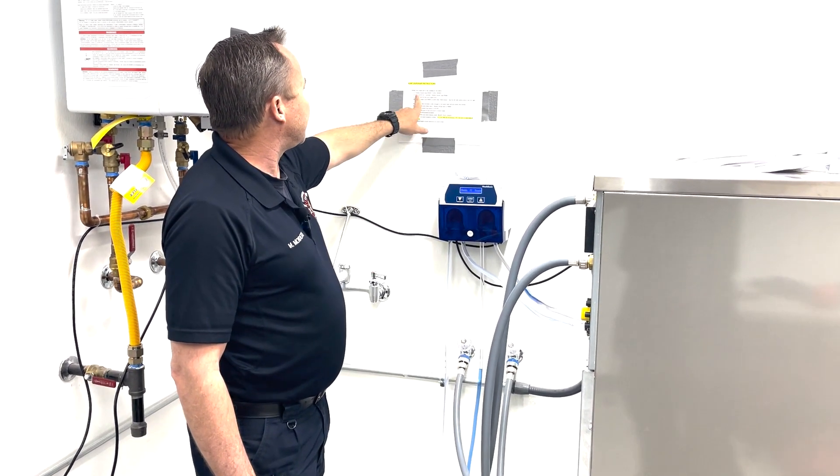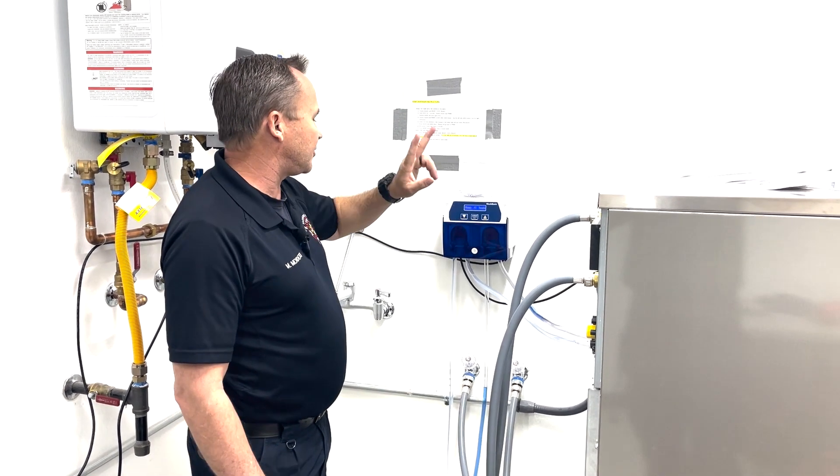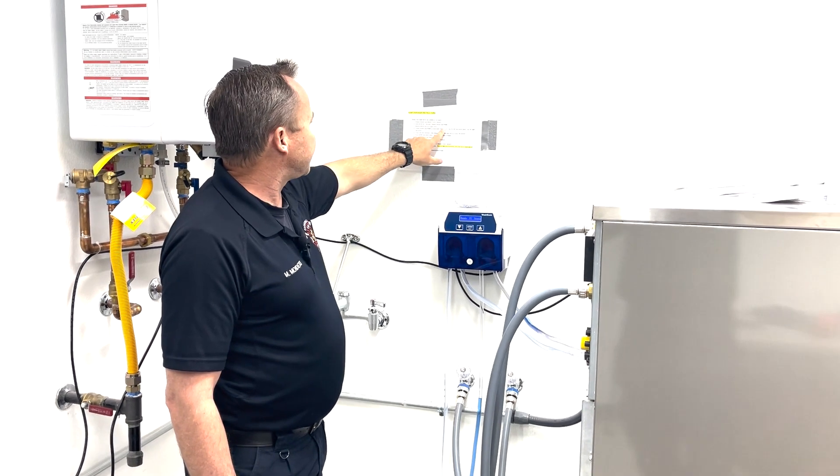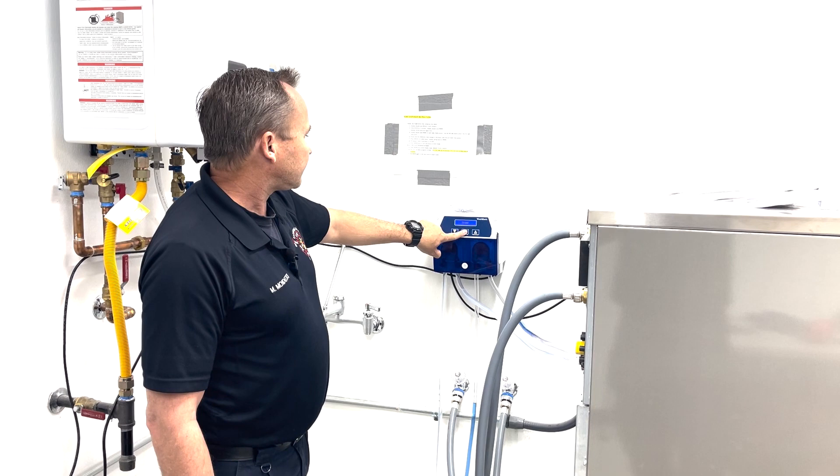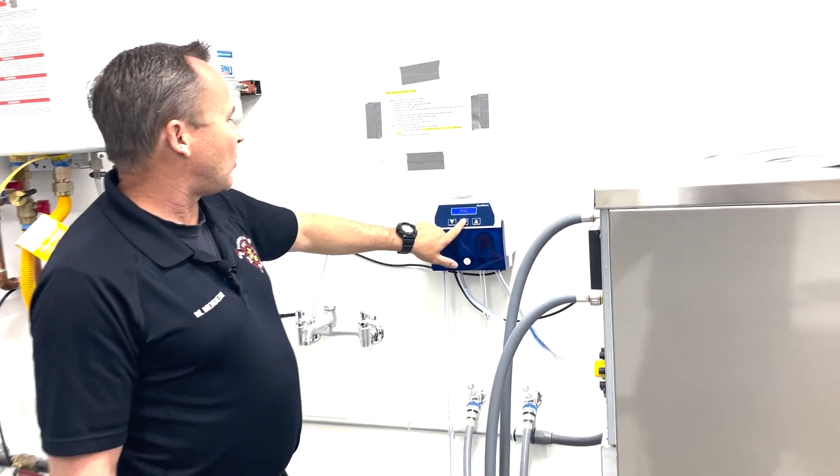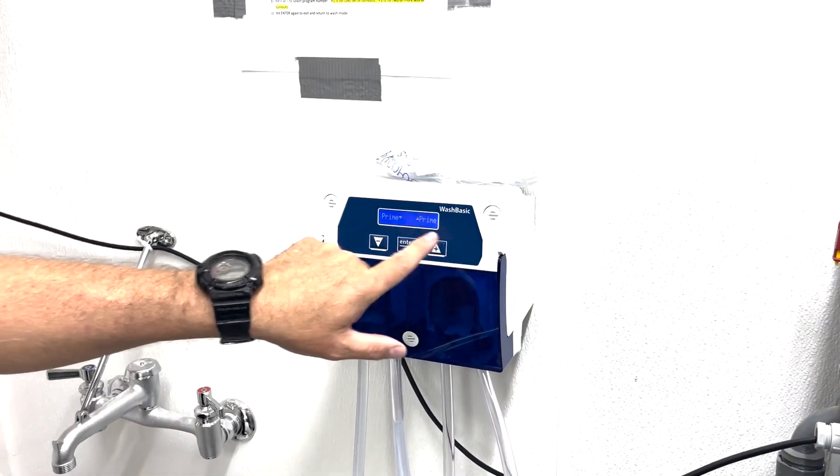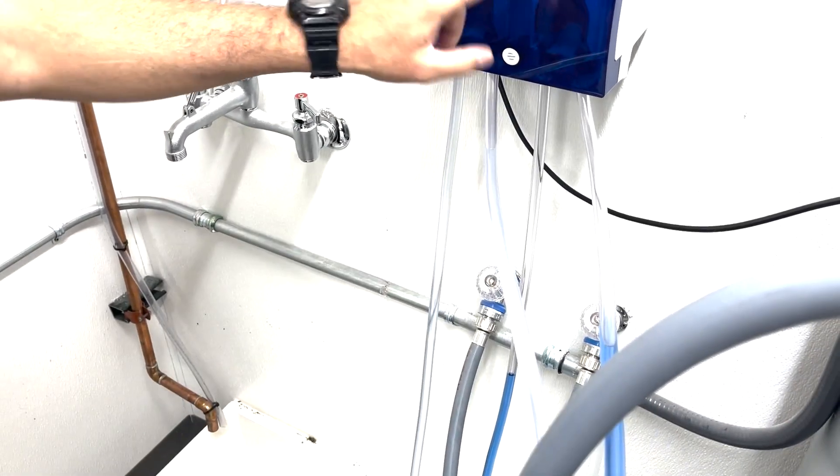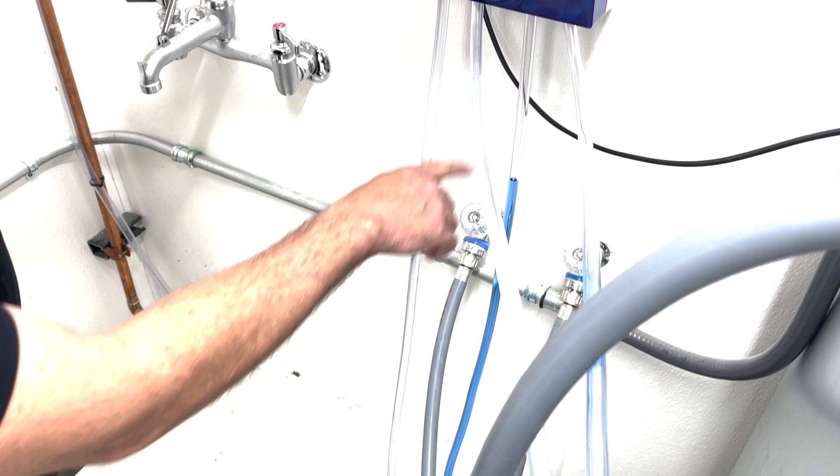It says display should read 'Ready P1 or P2'—there's only two programs. Hold Enter for three seconds. The display should read 'Prime.' We'll hold Enter until it reads 'Prime.' Press and release Enter once again. Basically, that's selecting prime. Now I can prime either the left or the right side. If I were to just hold this, it would prime the left side. If I hold this, it primes the right side. You see how the chemical is now coming up the tube.